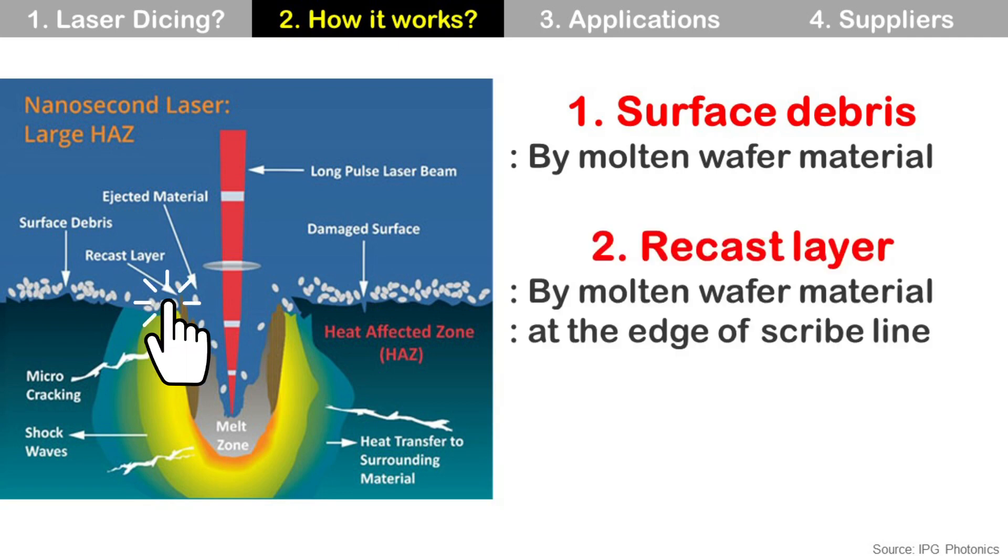The second one is recast layer. It is deposited molten wafer material at the edge of scribe line by cooling down, and it looks like a tiny hill. It makes uneven surface morphology of wafer then causes problems for following processes. So we need to minimize it by process parameter optimization.